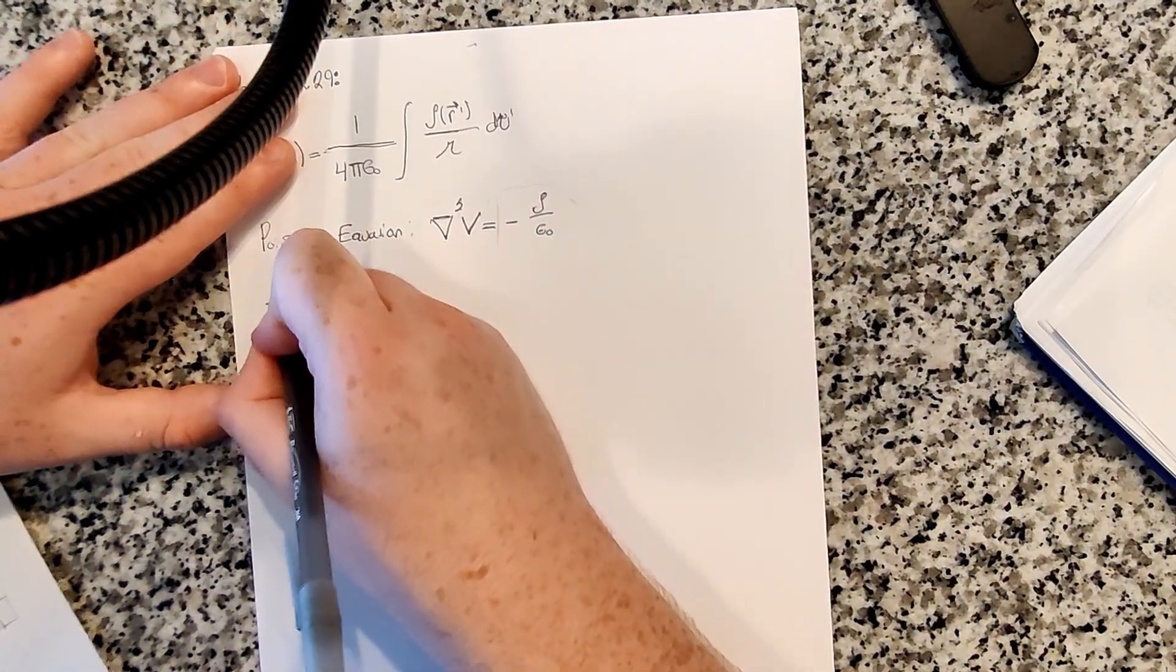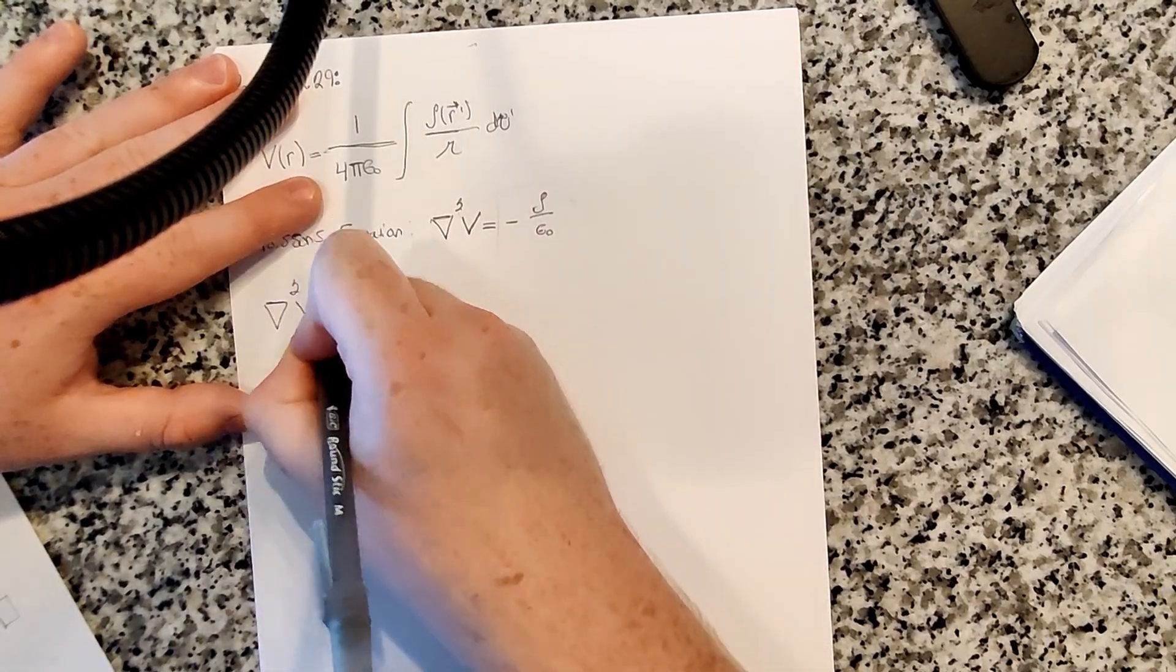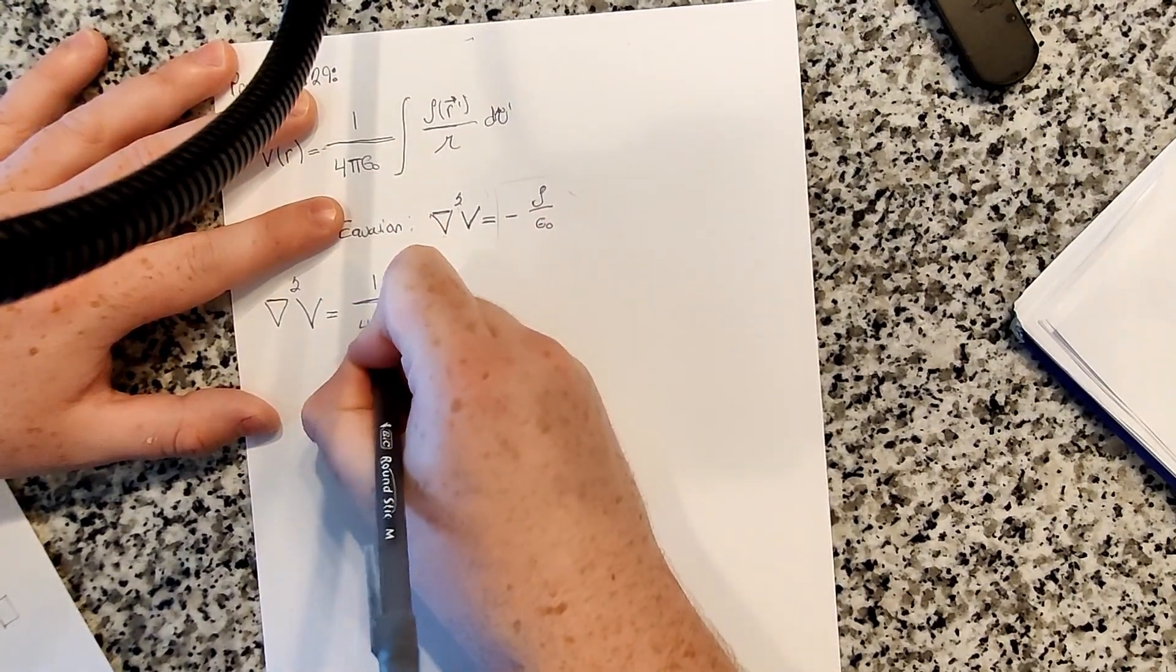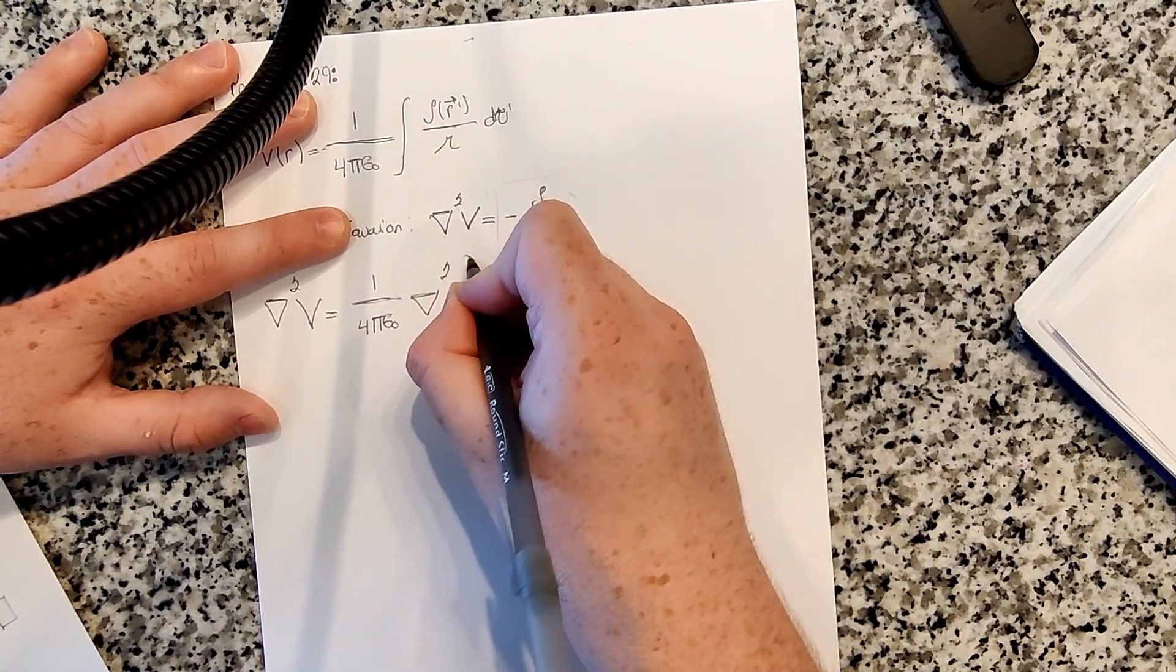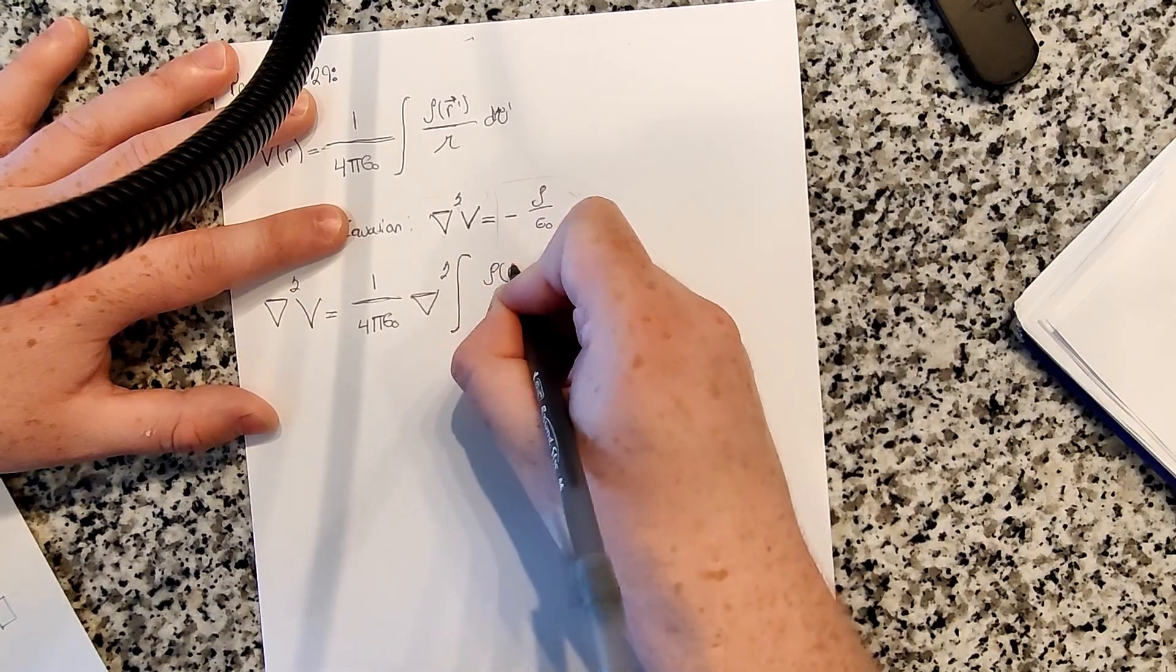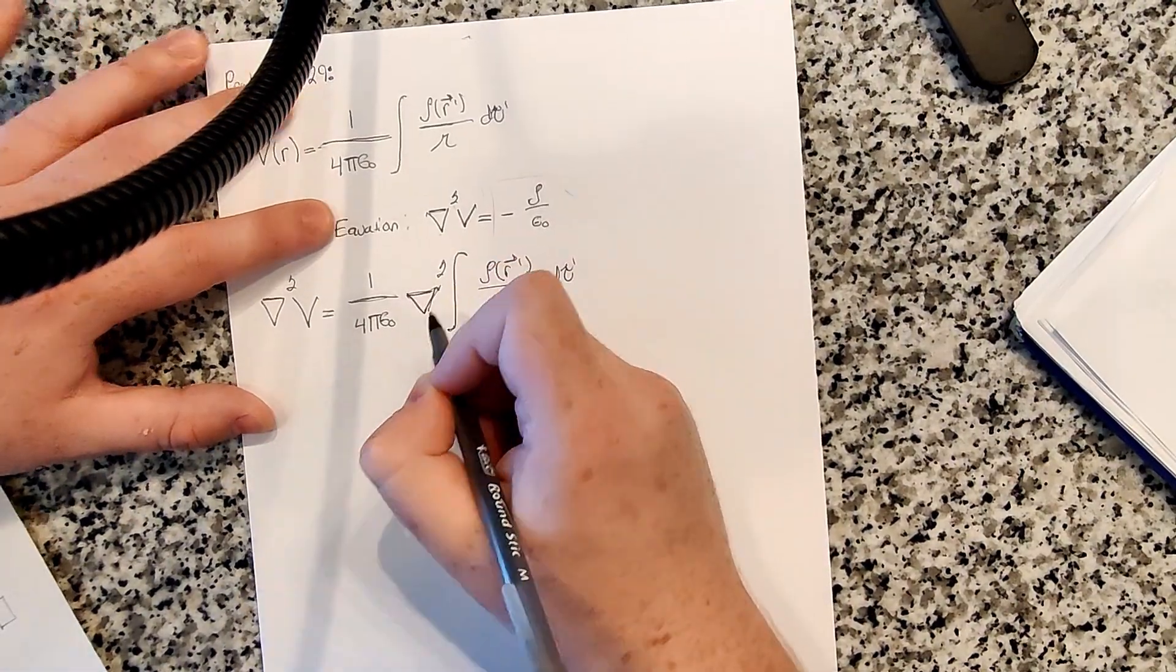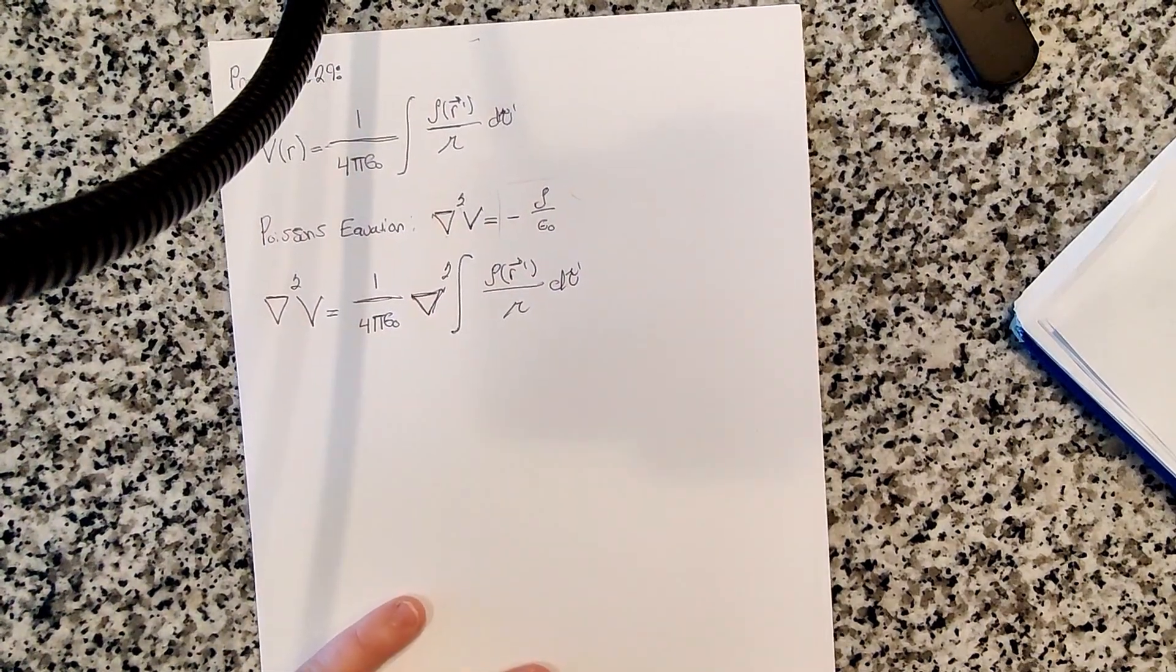So let's go ahead and do that. So the Laplacian, we take the Laplacian of v, our v up here. Well, 1 over 4 pi epsilon naught, that's a constant. So let's just have that sitting out here. Then we have Laplacian and the integral of rho of r prime over r prime. So the Laplacian is actually a function of space. It's a function of all x, y, z or whatever.